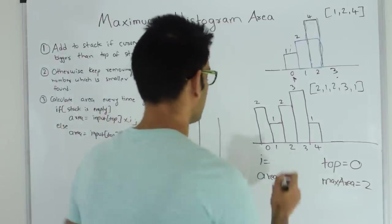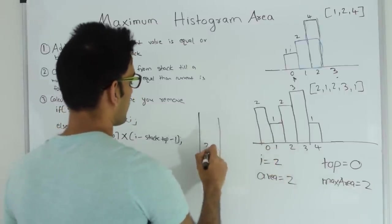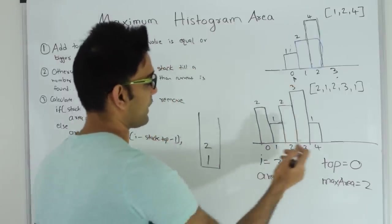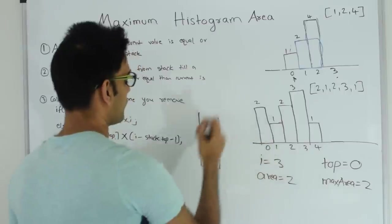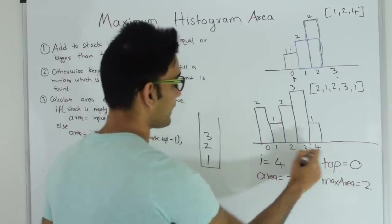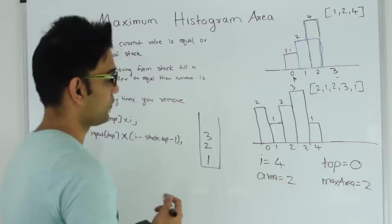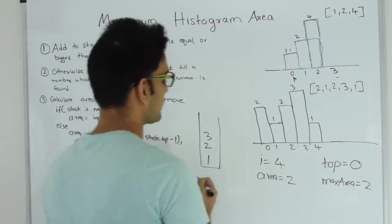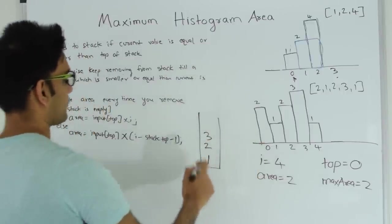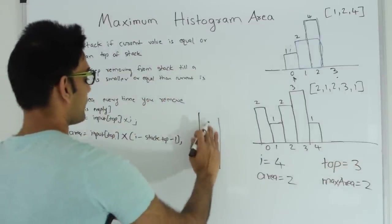Now i becomes 2. Value at index 2 is greater than value at the top of the stack, so index 2 goes on top. Now i becomes 3. Value at index 3 which is 3 is greater than value at index 2 which is 2, so index 3 goes on top of the stack. Now i becomes 4. Value at index 4 which is 1 is not greater than value at index 3 which is 3, so we keep popping. Top becomes 3 and we remove it.